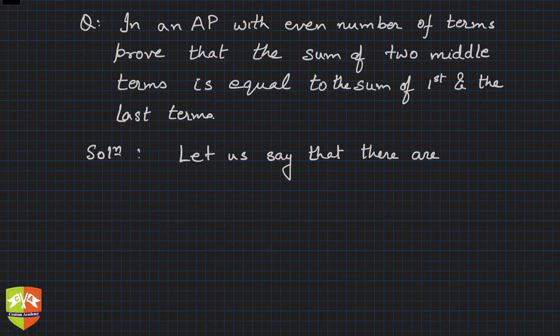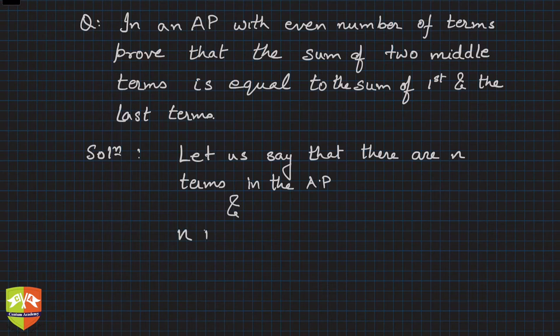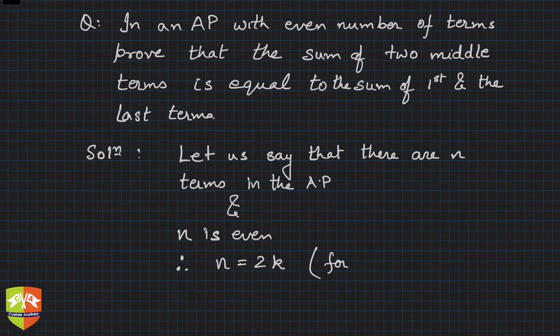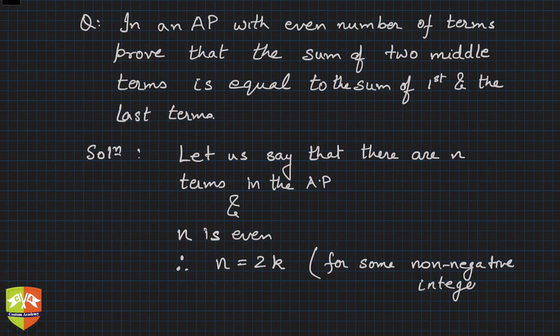N is even, therefore we can say n is equal to 2k for some non-negative integer k. Non-negative means 0, 1, 2, 3, 4... K is a non-negative integer.